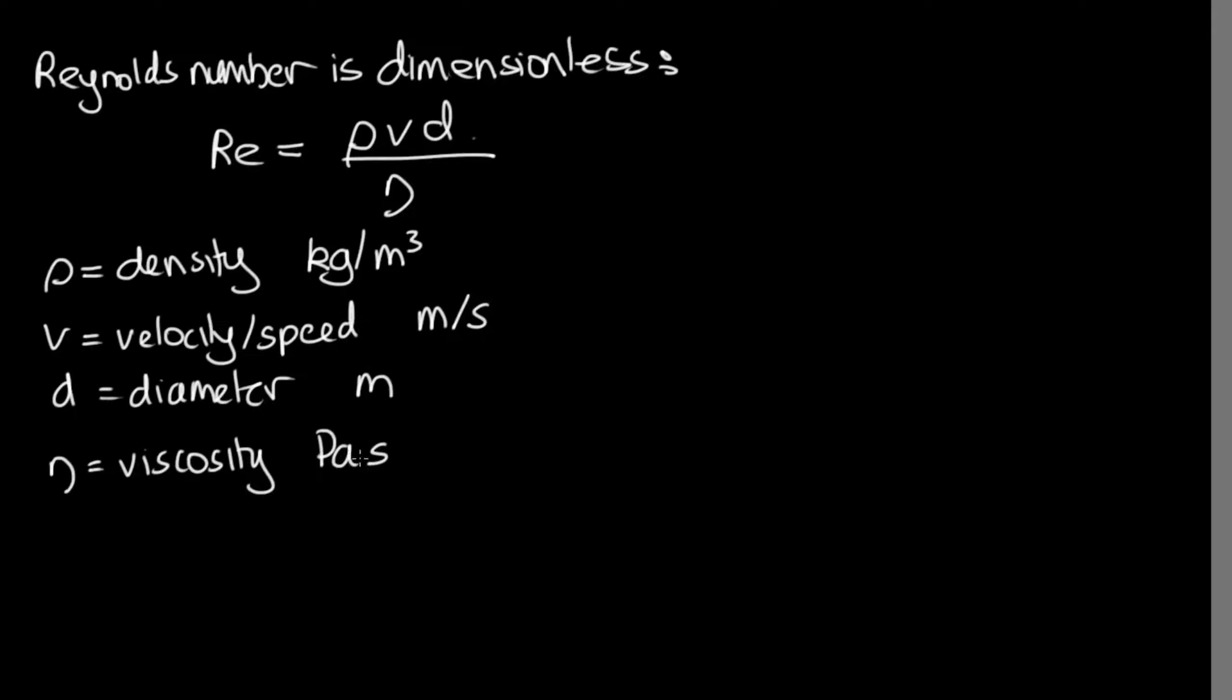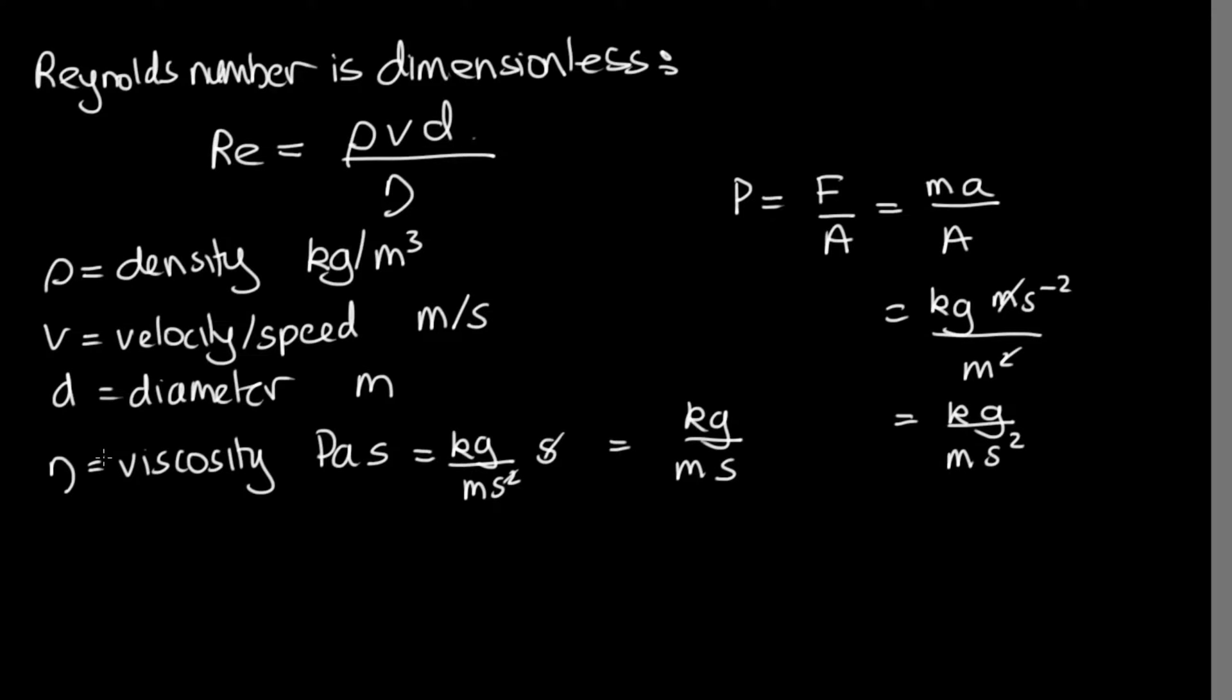Viscosity has units of pascal seconds. We can actually simplify these units a bit further because we know that pascals is the units for pressure, and pressure is equal to force over area. Force is actually equal to the mass times the acceleration, and this is over area. So the SI units for mass are kilograms. The SI units for acceleration are meters per second per second, so that's m·s^-2. We can cancel this meter with this meter, and so we've got kilograms over meter·second squared. So pascal seconds are kilograms over meter·seconds, which is the units for viscosity.